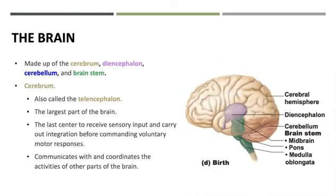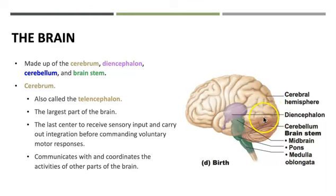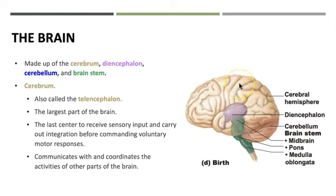The brain has several parts: the cerebrum (also called the telencephalon), the diencephalon, the cerebellum (our 'little brain'), and the brainstem. The cerebrum is the largest part of the brain and is the last center to receive sensory input and carry out integration before commanding voluntary motor responses. Sensory information typically makes a stop at the thalamus in the diencephalon, is then relayed into the cerebrum, and from there we determine whether a motor response is needed.